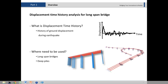Displacement time history is the history of the ground displacement during an earthquake event. When an earthquake occurs at a source location, what will be the displacement of different parts of the ground responding to that force? We can then use that function to apply the force to, for example, a new bridge being designed.